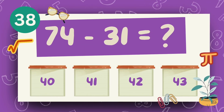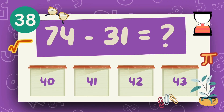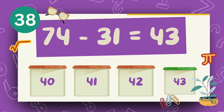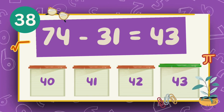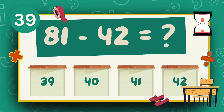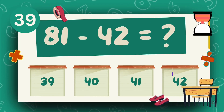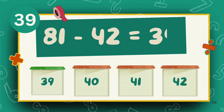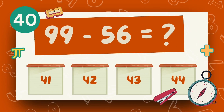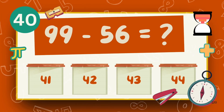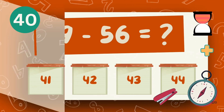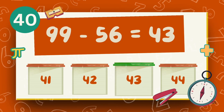What is seventy-four minus forty-four? What is eighty-nine minus forty-seven? The answer is thirty-nine. What is ninety-nine minus fifty-six? The answer is forty-three.